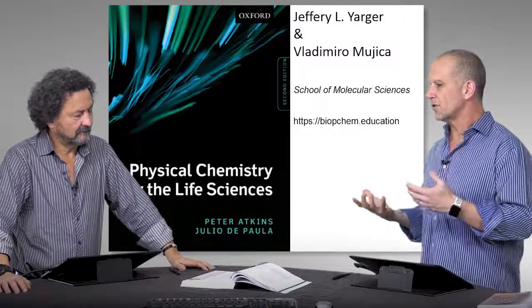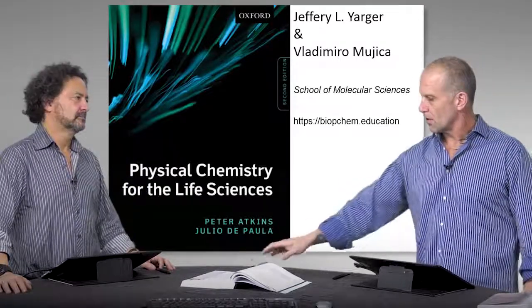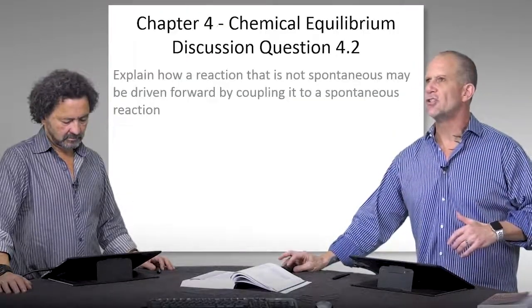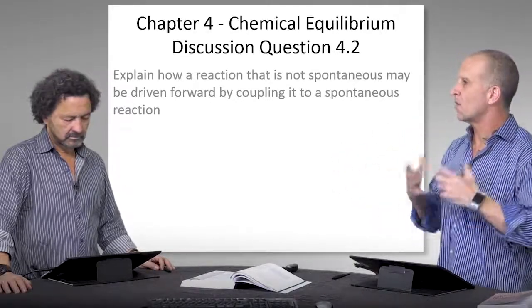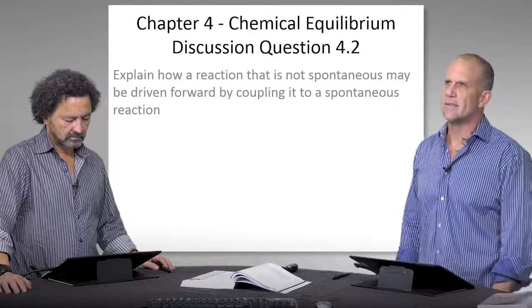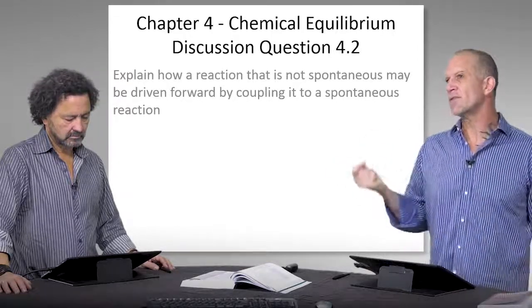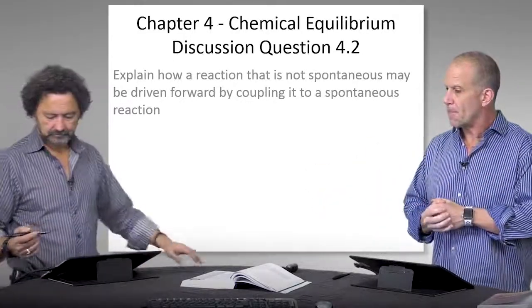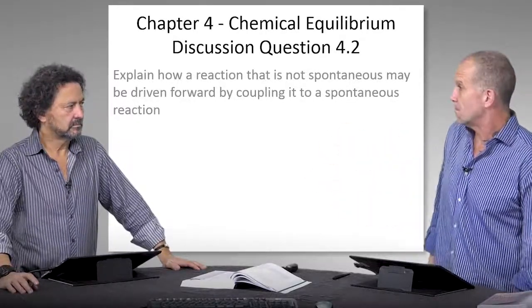So Vladdy, today we're making a video to look at Atkins Physical Chemistry for the Life Sciences, the textbook, specifically edition number two. In chapter four is where they introduce and start covering chemical equilibria. And specifically, we're going to look at a specific discussion question which is looking at some of the general concepts behind what was discussed in this chapter.